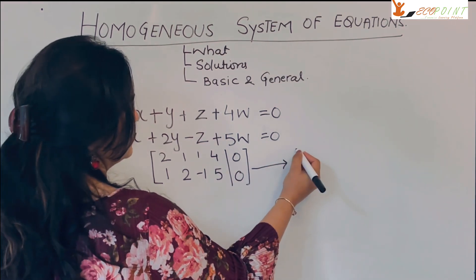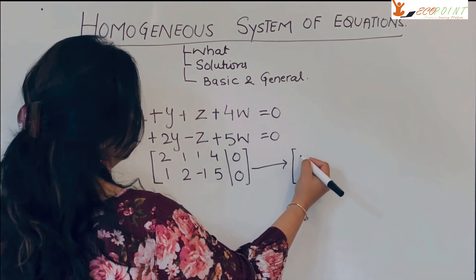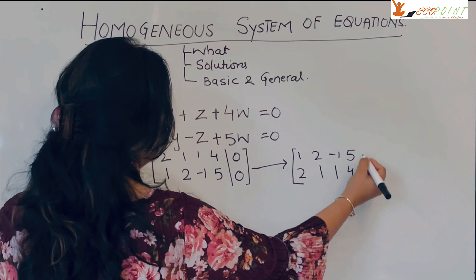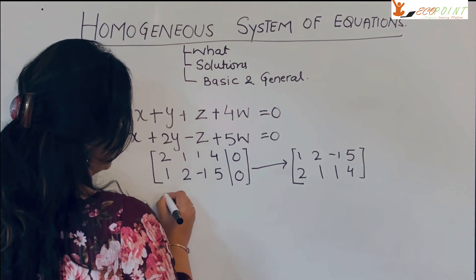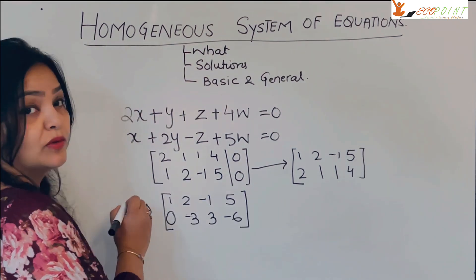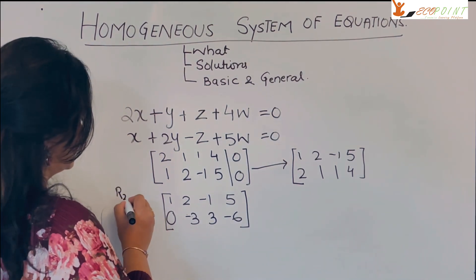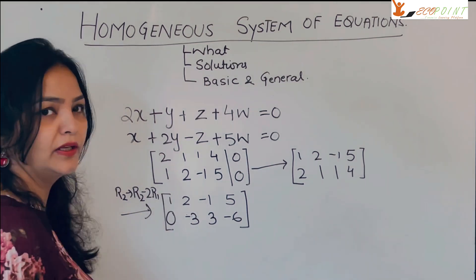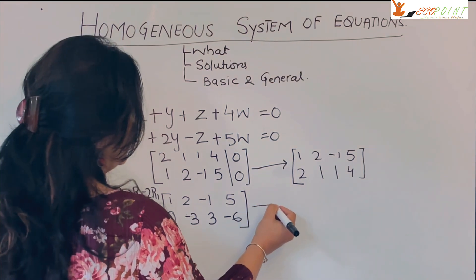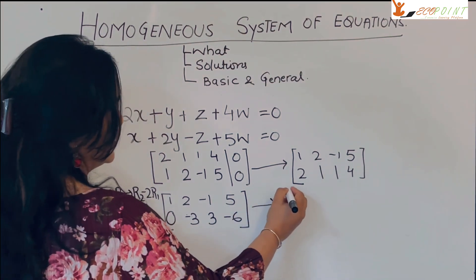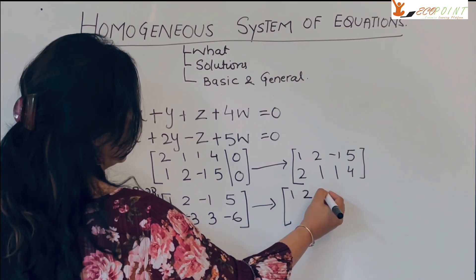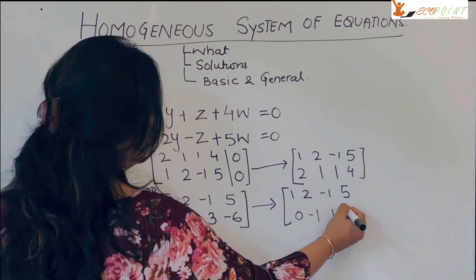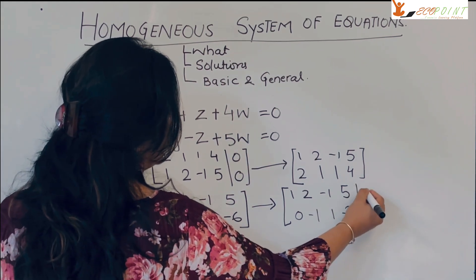I'll swap the rows to get [1, 2, −1, 5] and [2, 1, 1, 4]. Now applying row operation R2 → R2 − 2×R1 to make a zero. After reduction, and noting that 3 is a common factor, we get: [1, 2, −1, 5 | 0] and [0, −1, 1, −2 | 0].